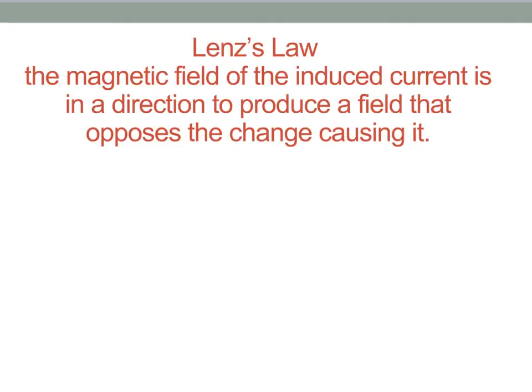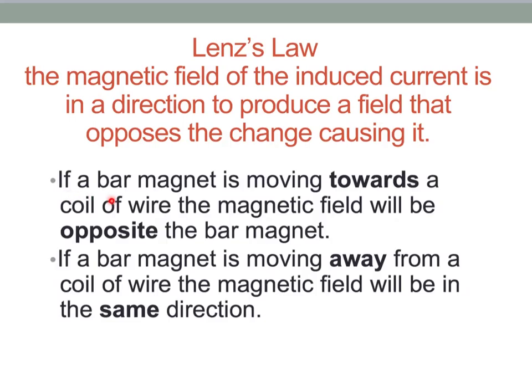So the last thing here we're going to learn about is something called Lenz's Law. And what Lenz's Law says is just this. The magnetic field of the induced current is in a direction to produce a field that opposes the change causing it. What in the world does that mean? So if we have a bar magnet and we move it towards a coil of wire, the magnetic field will be opposite the bar magnet. And if the bar magnet is moving away from a coil of wire, the magnetic field will be in the same direction. Again, oh my word, all these words, how is this going to make sense? So let's take a look at a picture and see if that can help clarify things.